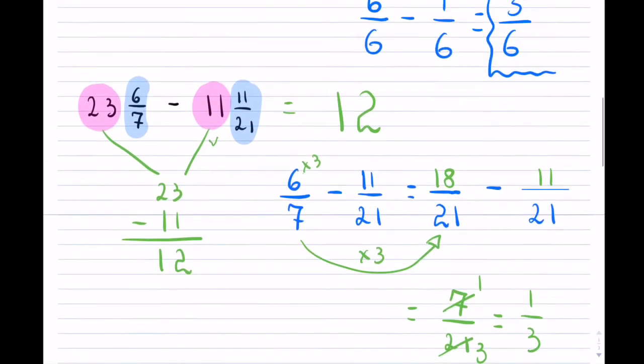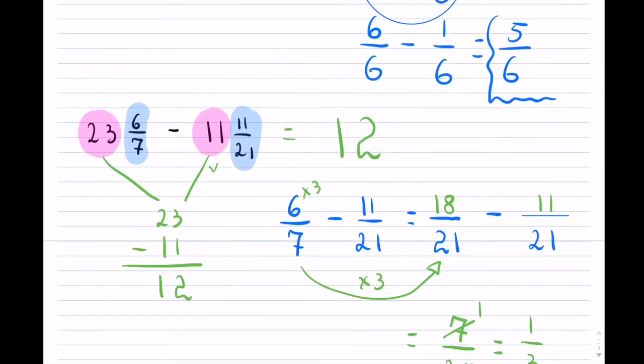Now 7 over 21 can be reduced to 1 third, because 7 goes into 21 three times. So that is the fraction component. But notice, now it's positive, unlike the previous example. So when it's positive, then we have nothing else to do, and we're done. So the answer is 12 and 1 third.